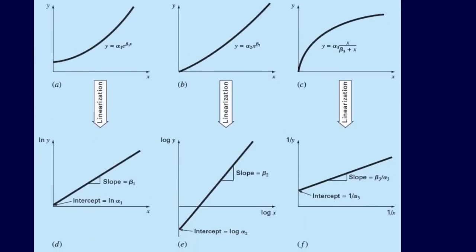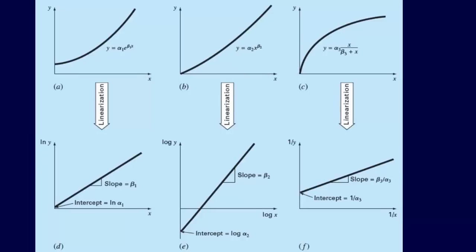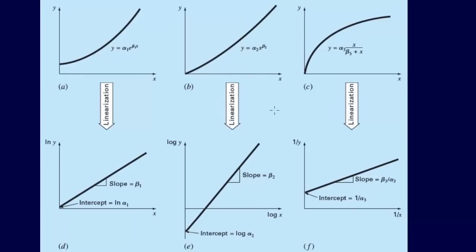And so here's a screenshot from the book of what some of the things that they show that we can do here. So for example, we can linearize, we can take this y equals alpha 1 e to the beta 1 x. And so we could linearize that. So instead of having the axis being x and y, we have the axis being x and ln of y. So we just plug it out and plot it out with a log y scale.